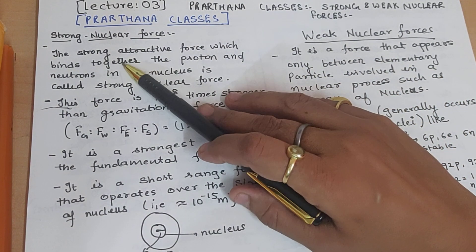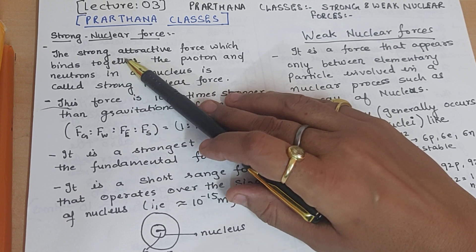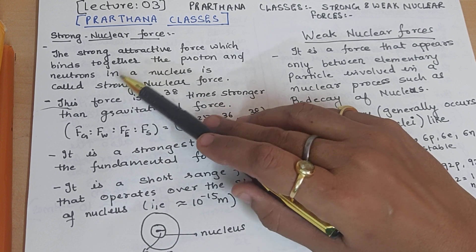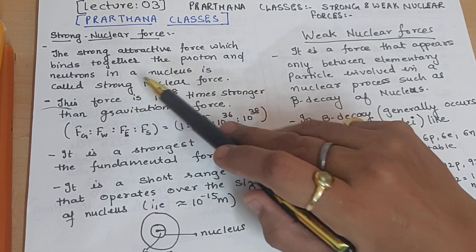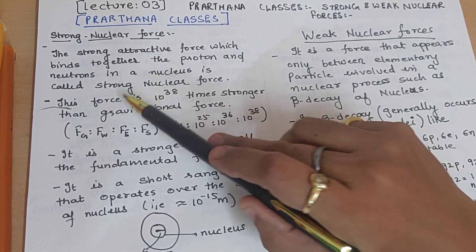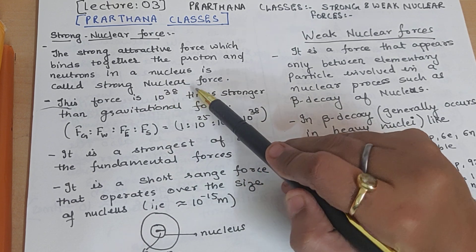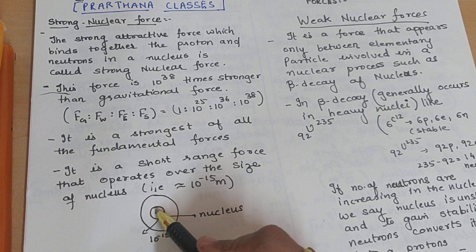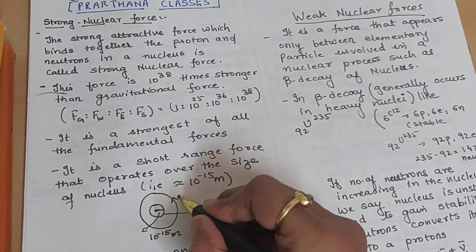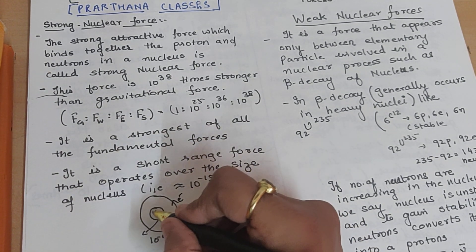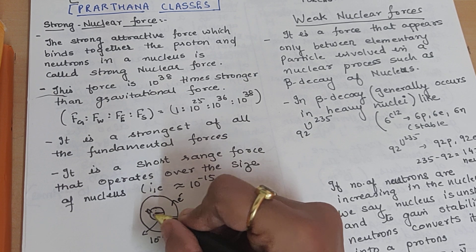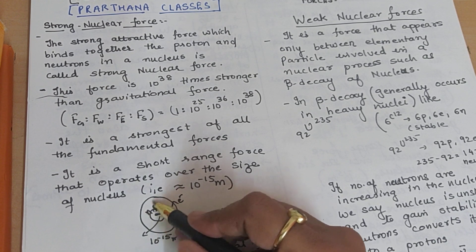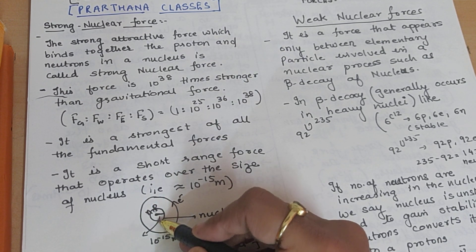First, we will see the strong nuclear force. Strong nuclear force is an attractive force which binds together the proton and the neutron in the nucleus. It is called the strong nuclear force. You know that in the atom, the electron revolves around the nucleus, and in the nucleus there are protons and neutrons.